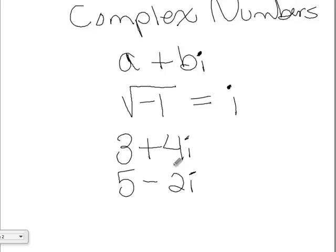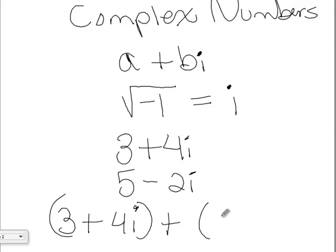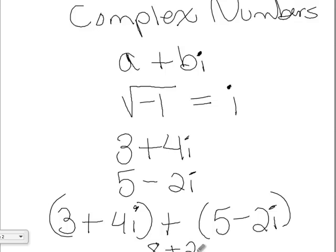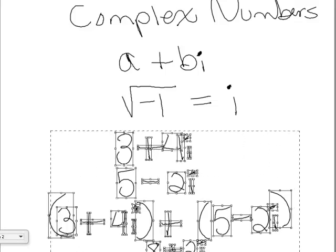When you're doing basic operations like adding or subtracting, you deal with them the exact same way that you would deal with things that had an x in them instead of an i. For instance, if we were going to add 3 plus 4i to the complex number 5 minus 2i, all you would do is combine like terms. So 3 plus 5 gives you 8, and 4i plus negative 2i gives you 2i. So that would be your solution.